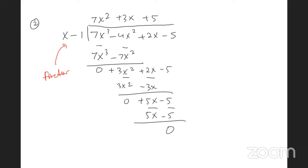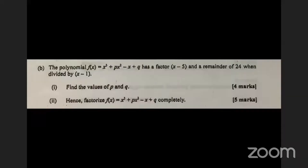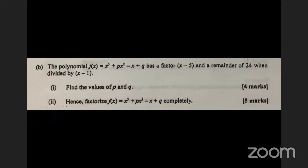Now I want to show you what this looks like in Pure Maths — this is a 2015 exam question worth 20 marks. They give you an equation and say it has a factor when divided by one expression, and a specific remainder when divided by another, asking you to find p and q. Since you have two unknowns, you'll need to solve simultaneously, which means you need two equations.